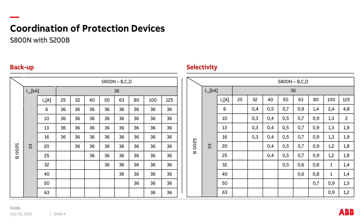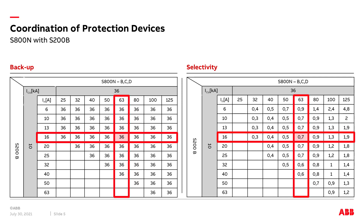Here you see the two tables of backup protection and selectivity for the upstream breaker S800N and the S200 as downstream breaker in comparison. If the upstream S800 is selected with a nominal current of 63 amperes and the downstream S200B with 16 amperes, the backup protection would be 36 kilo amperes — even though the S200 only has 10 kilo amperes. However, the selectivity level would be only 700 amperes, meaning the S800 will not trip as long as the short circuit current is less than 700 amperes.